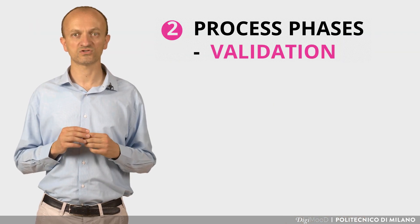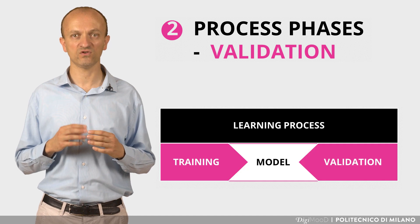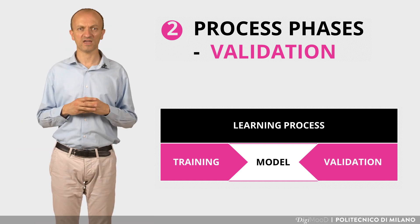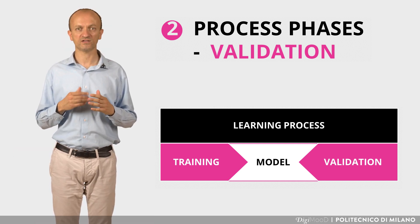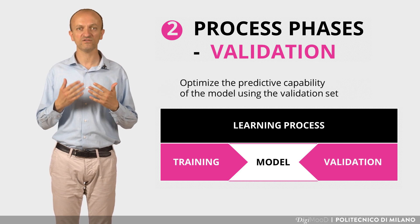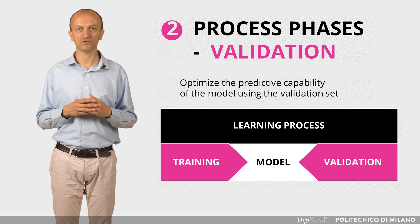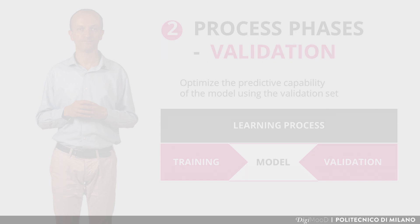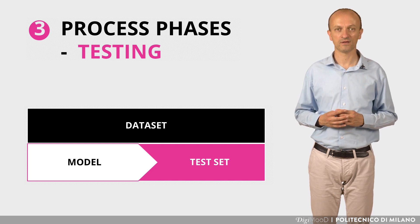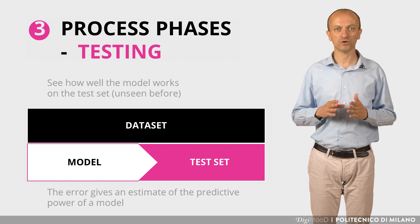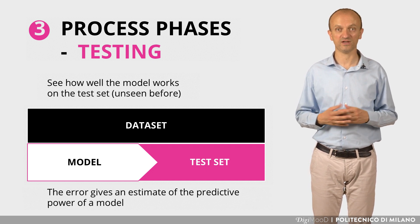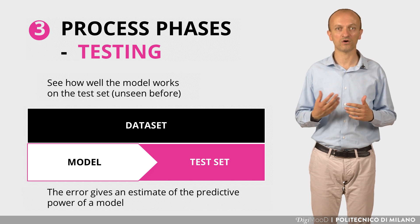We talk about validation to describe the part of the process that verifies the behavior of the system while it is learning. Based on this validation, we iteratively try to improve learning. We proceed to optimize the predictive capacity on the data of that model through validation. Finally, we talk about testing to describe the final phase of the process. After learning from the existing data, we want to verify how the system behaves on completely new data, thus obtaining the predictive power of the model.